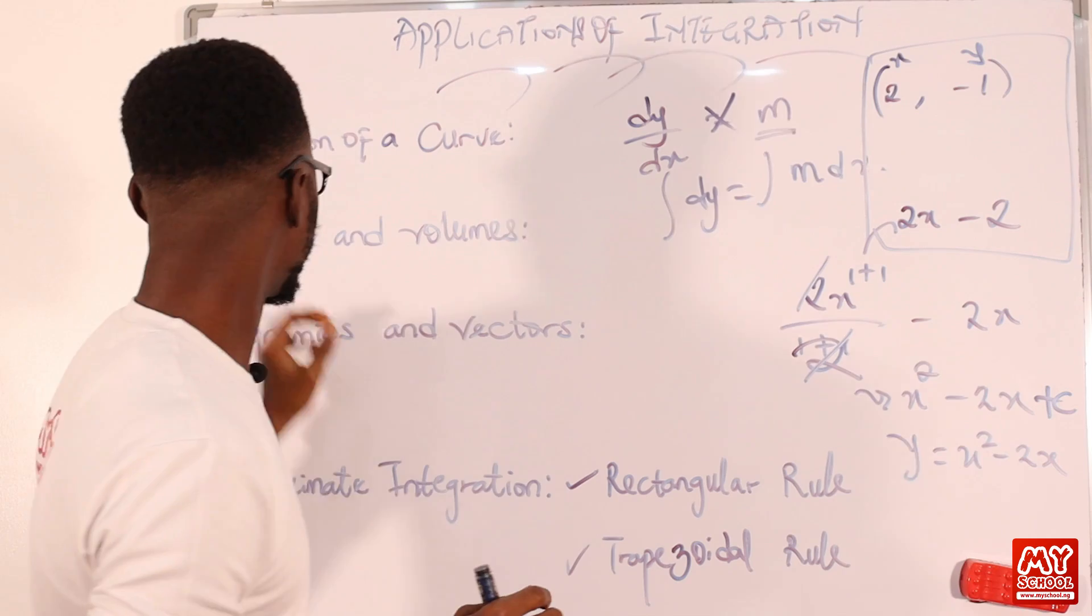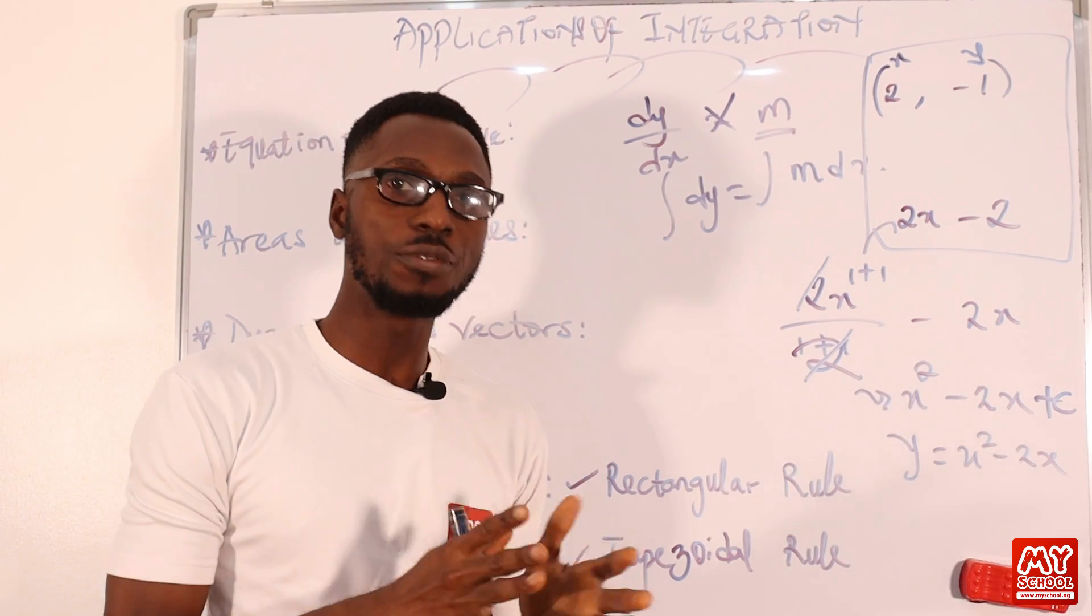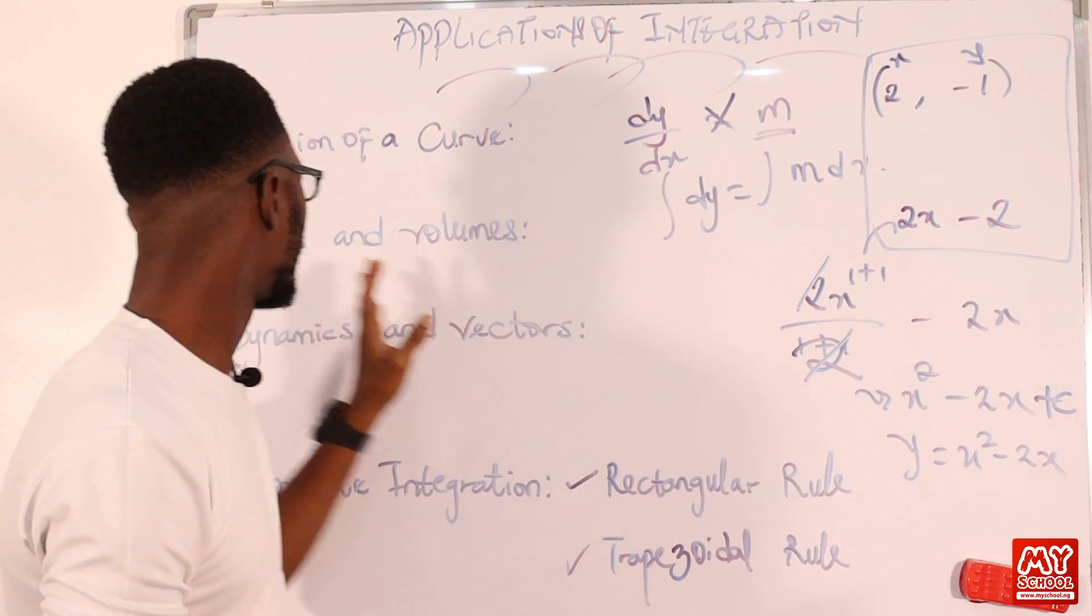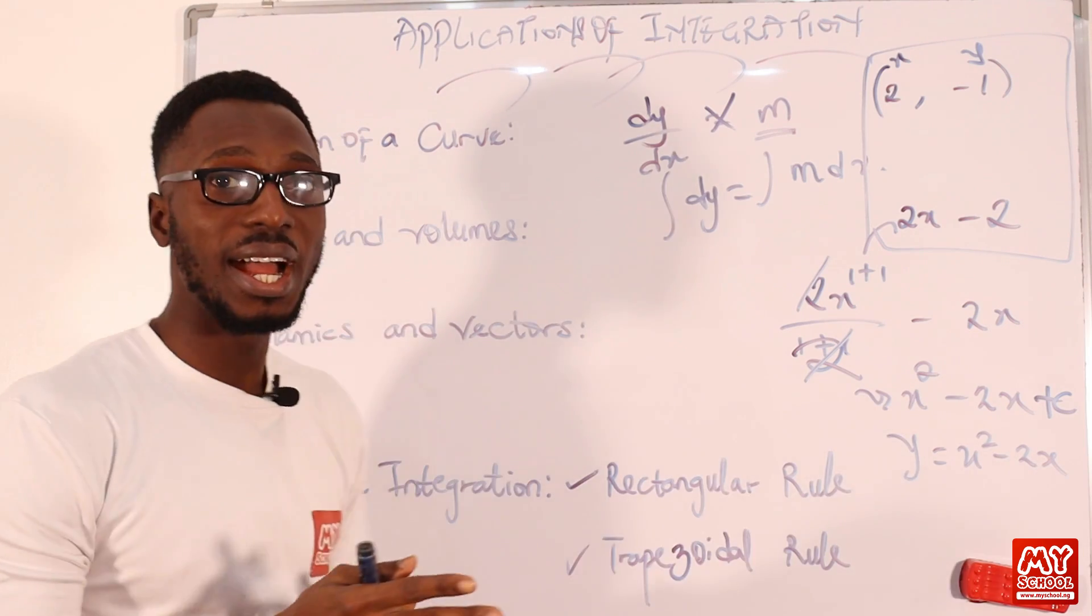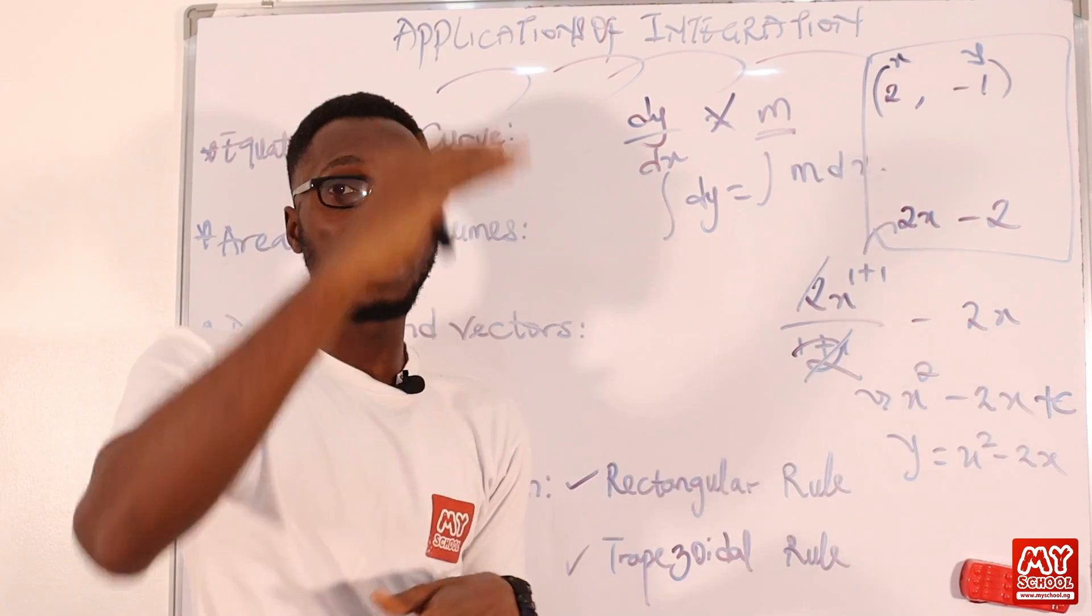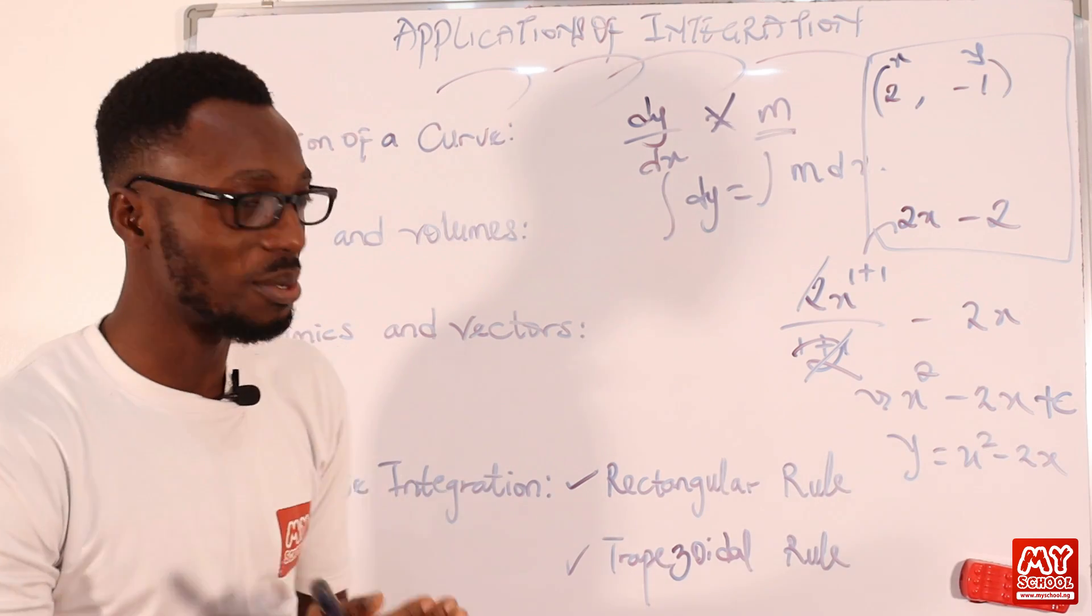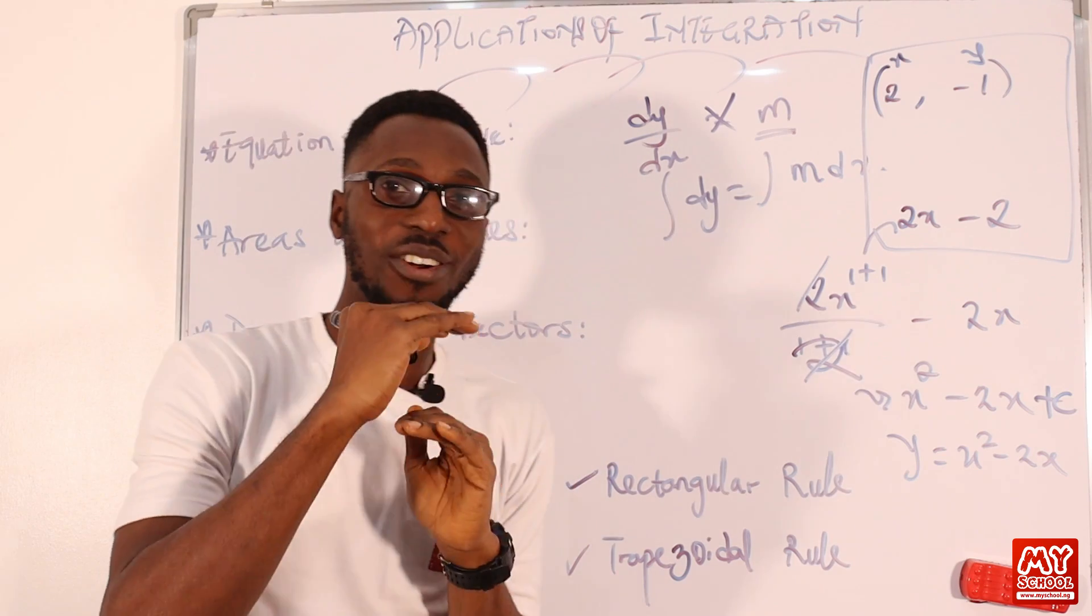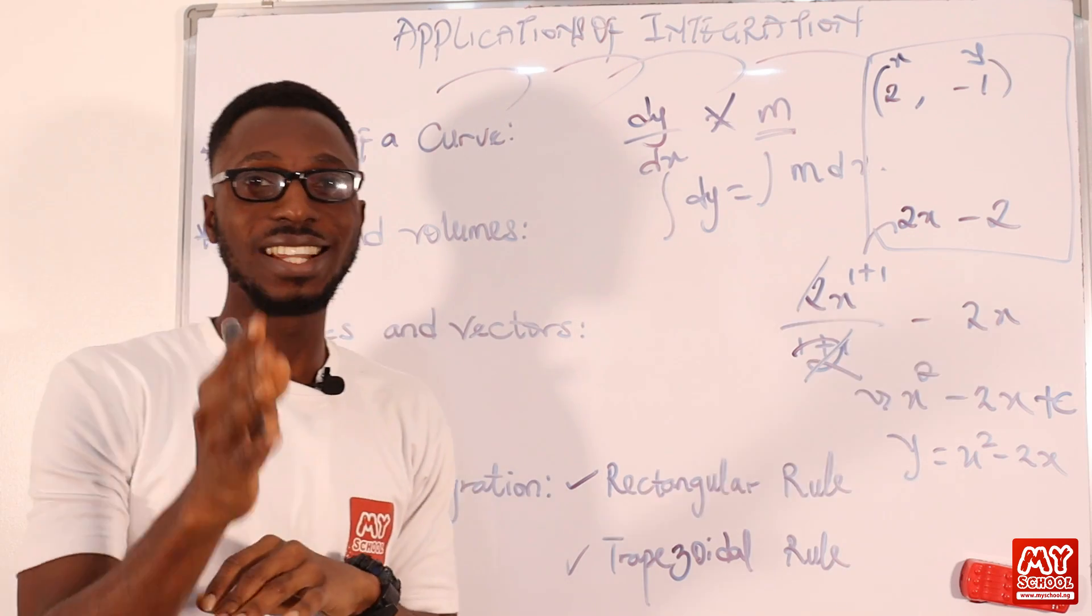Let's move on to areas and volumes. This area can actually involve two functions. When I say two functions, it can be a line and a curve or two curves. So when it involves curves, what you are going to get for your area is the difference between these two areas. The function with the greater area minus the function with the lesser area. Or sometimes you may be given areas and volumes under the curve.